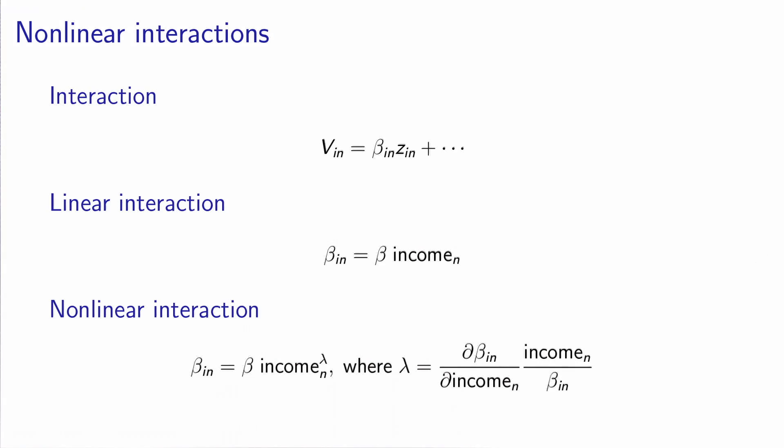So if you remember, the idea of the interaction is that we would like the βin to be individual specific. And the way we presented it before is to say, well, let's make βin a function of one of the socio-economic characteristics.